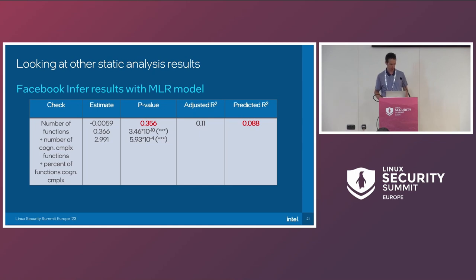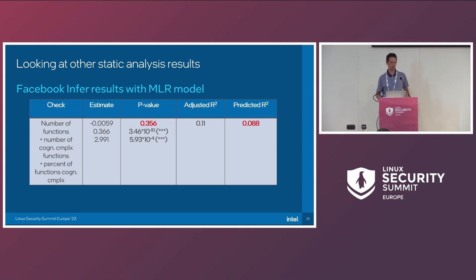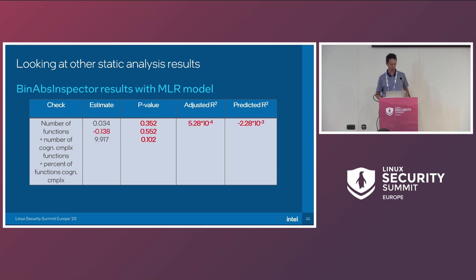Maybe plain linear regression isn't good enough — if we do multiple linear regression combining these variables into a single model, we find the percent of functions cognitively complex remains statistically significant. For each percent increase, we get 0.8 bugs, and R-squared is the best so far. For Facebook Infer, we see a reasonably okay R-squared of 0.11 — 10% of the variance is explained. Number of functions is no longer statistically significant there, so cognitive complexity is the key variable for explaining bugs found by Facebook Infer.